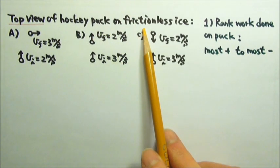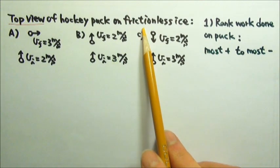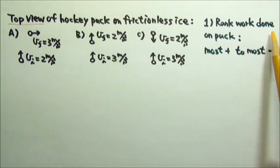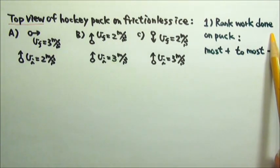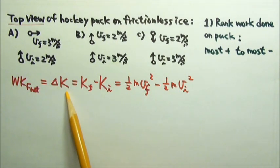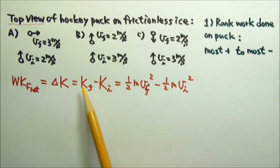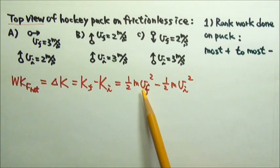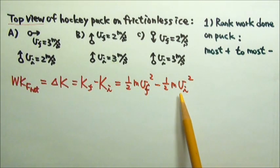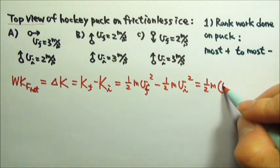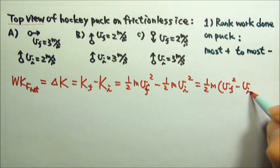Since the hockey puck is on horizontal frictionless ice, the exerted force on the puck is the net force. According to the work-energy theorem, the work done by the net force is the change in kinetic energy. The change in kinetic energy is the final kinetic energy minus the initial kinetic energy, which is ½m·v_f² - ½m·v_i². We can factor out the ½m, and what's left is v_f² - v_i².